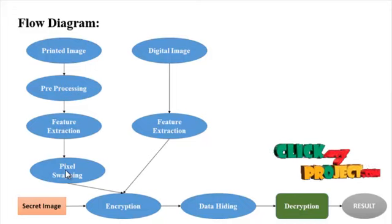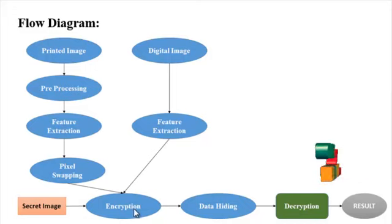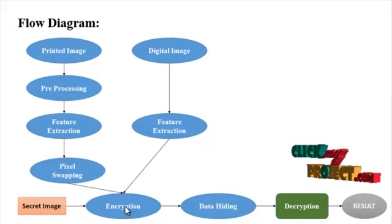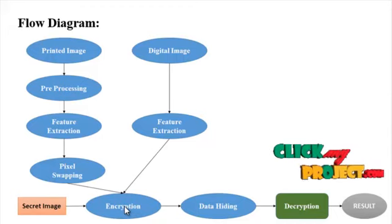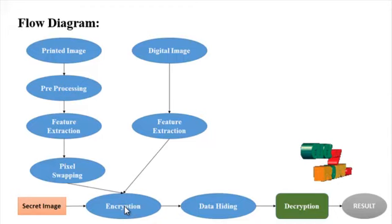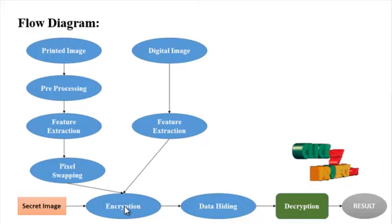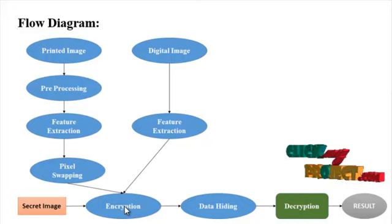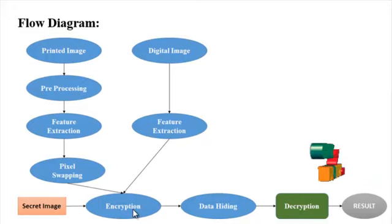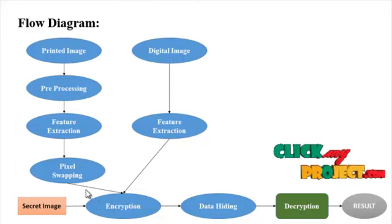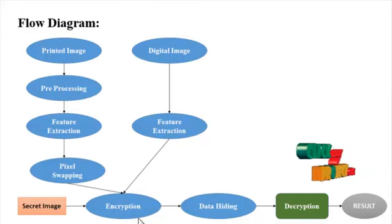Next, pixel swapping is performed only for the printed image. In the encryption stage, encryption is the process of transforming information to ensure its security. With the huge growth of computer networks and the latest advances in digital technologies, a huge amount of digital data is exchanged over various network types. Before encryption, pixel swapping for the printed image share is performed, which promotes tolerance of image distortion caused by the image preparation process.